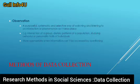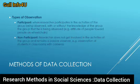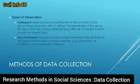Observation is more appropriate when information cannot be assessed by questioning. There are two types of observation. One is participant: where the researcher participates in the activities of the group being observed, with or without the knowledge of the group — for example, studying the attitude of people towards others. Non-participant: where the researcher does not get involved in the activities of the group and remains a passive observer — for example, observation of students in a classroom via camera, like in virtual exams these days.